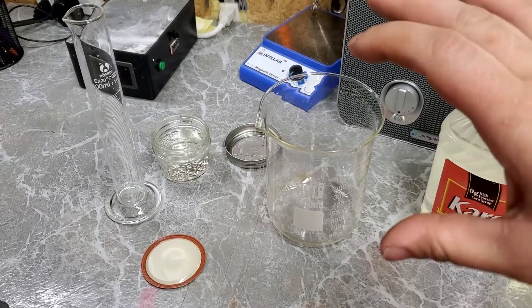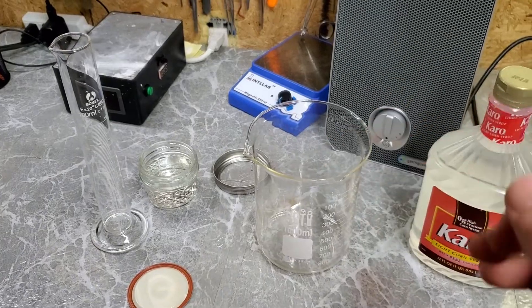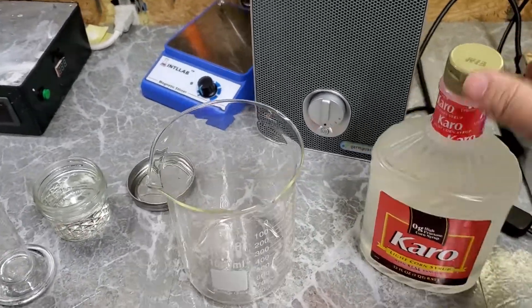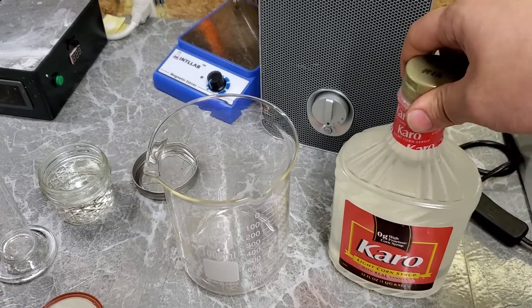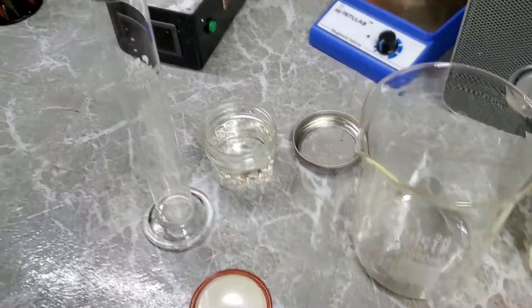I'm going to show you one of the easiest ways you can make your own liquid culture for growing mushrooms at home. This is going to be incredibly simple. All we need is some corn syrup and water. That's it. That's literally it.